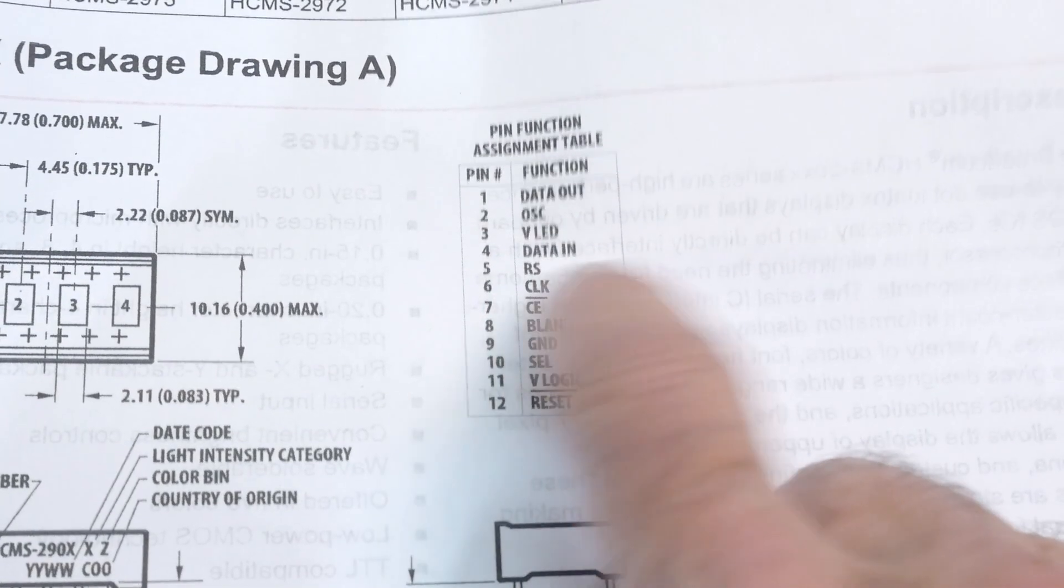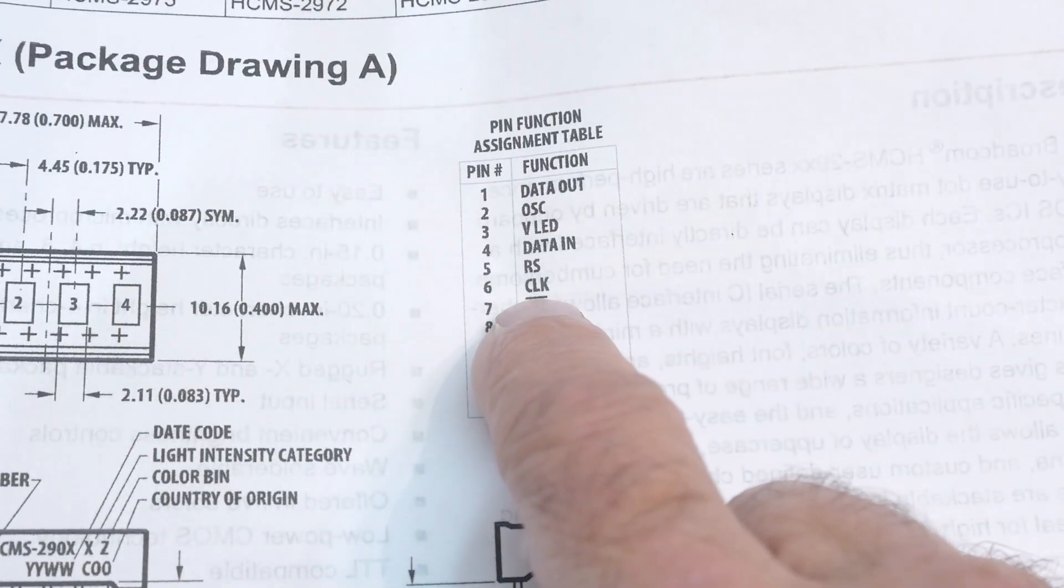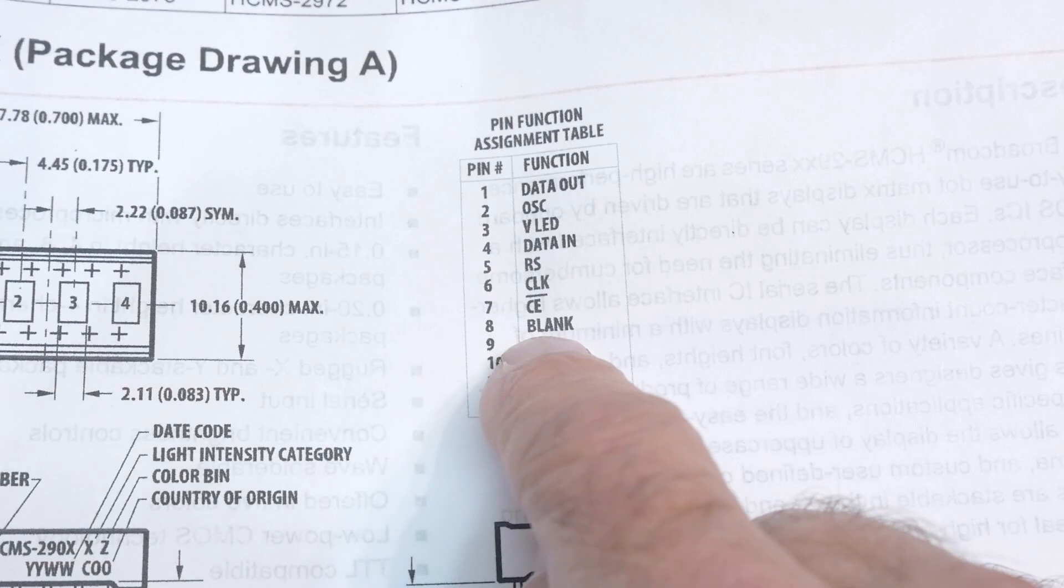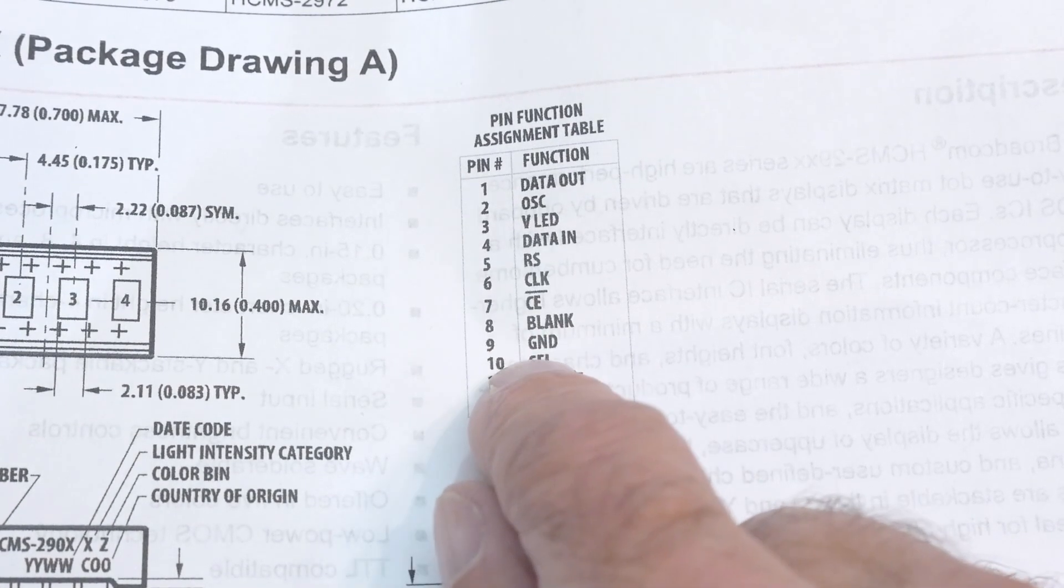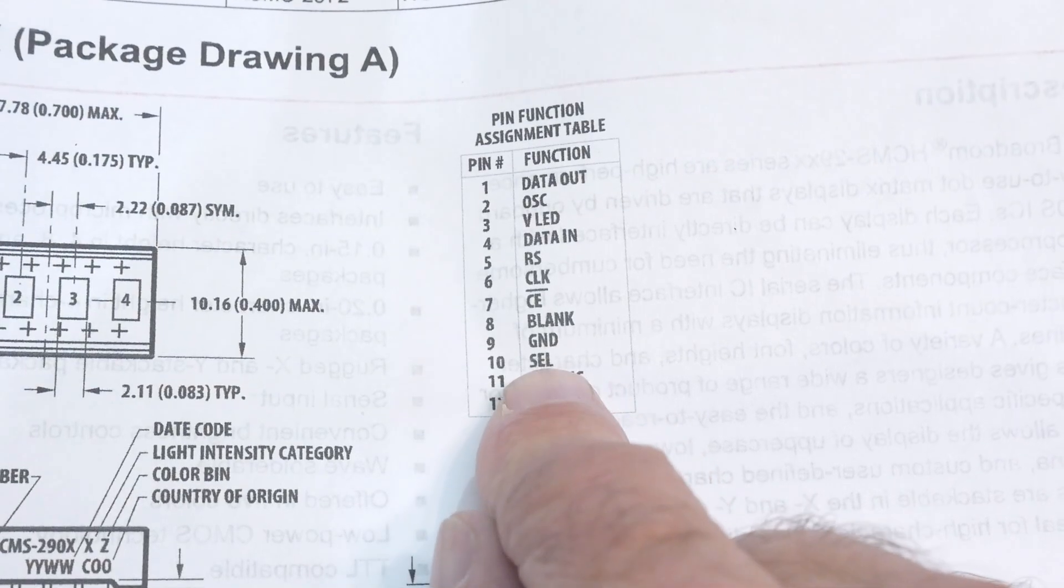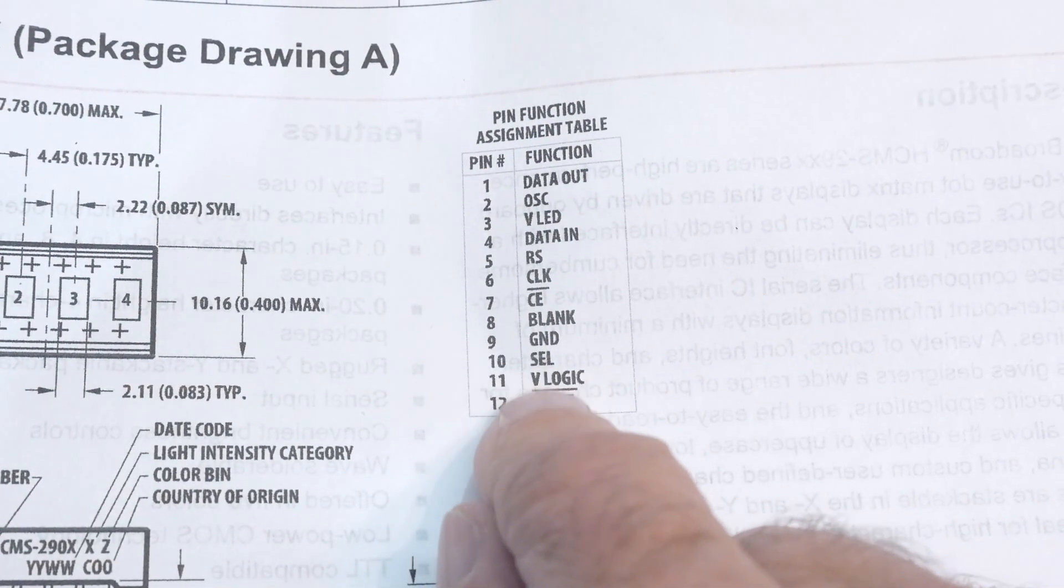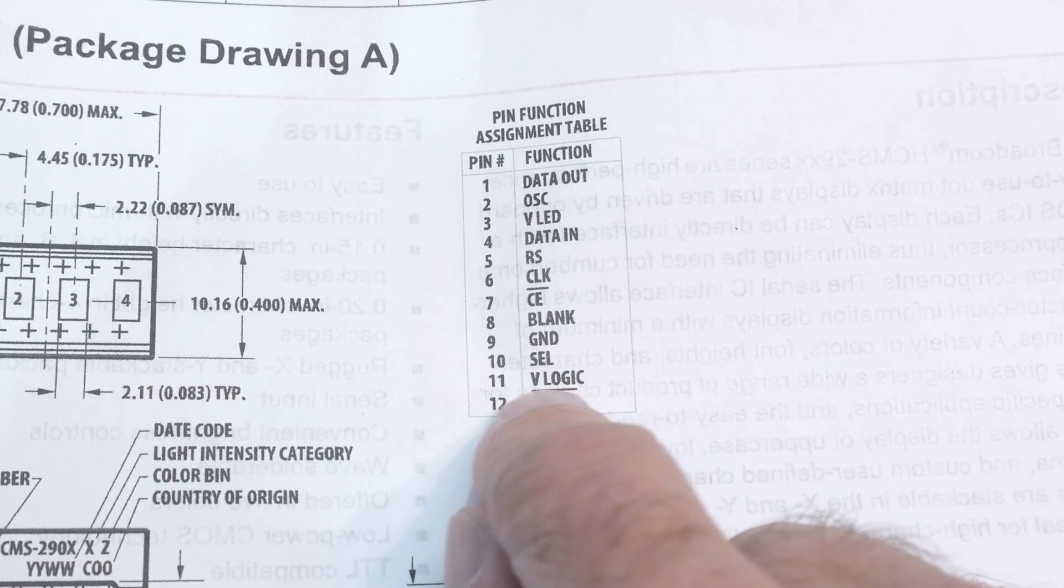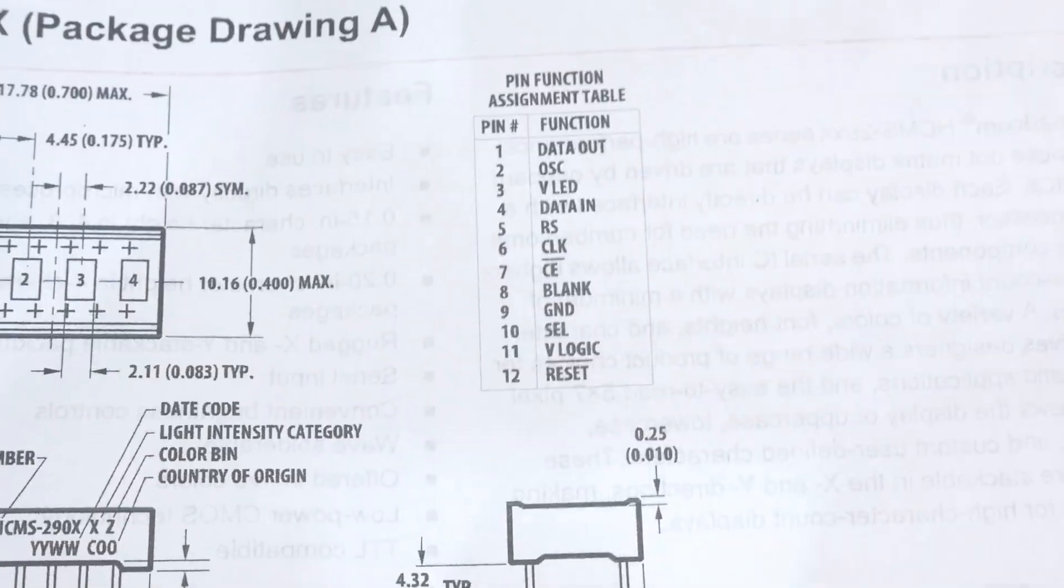You need voltage, data in, register select either control or data. You need to have a clock for your data. Chip enable. Blanking pin, you could just wire that high so you never blank the part. Ground, select. VLogic is the voltage for the chip, and this is the voltage for the LED. You can just tie them both to 5 volts, and then you can have a reset line if you'd like one.